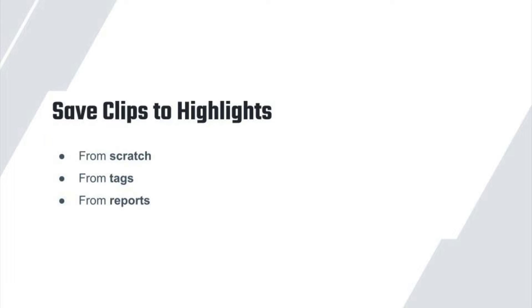To get started, here are three ways to save clips to highlights. First, you can create clips from scratch in any part of your video. Second, if you have sent your video into Huddle Assist or tagged it yourself, you can create clips for highlights from your tags. Lastly, you can create clips by using reports to find your best moments.